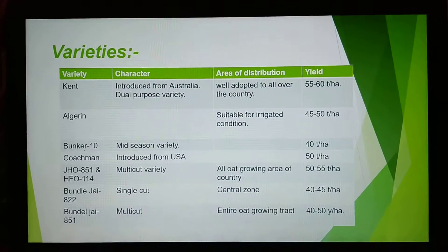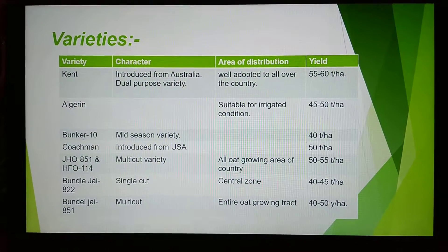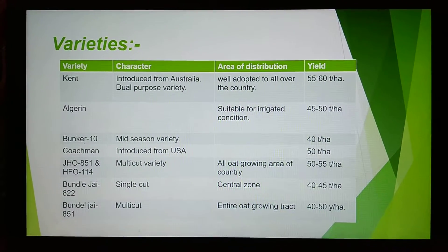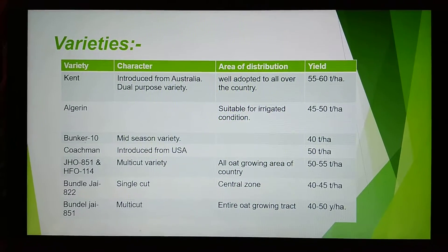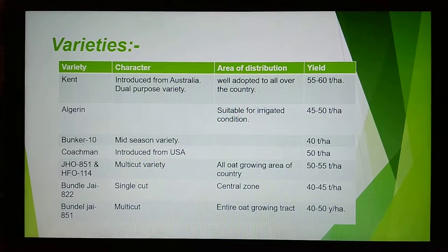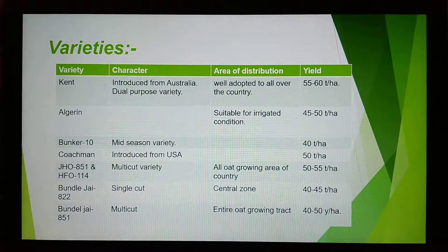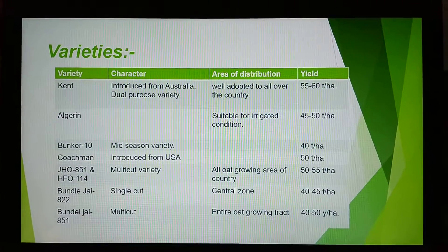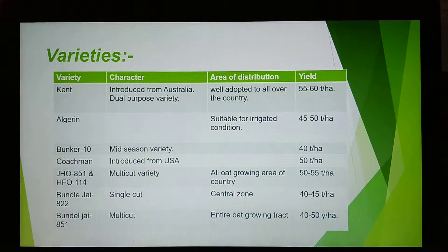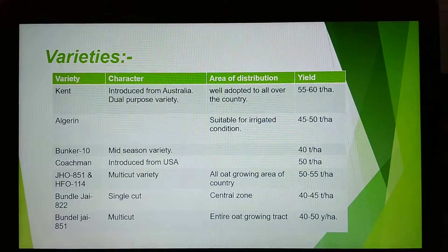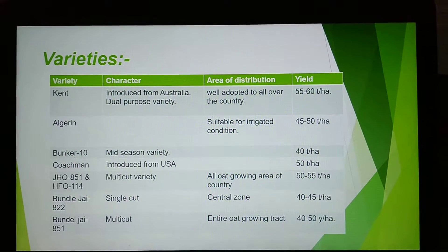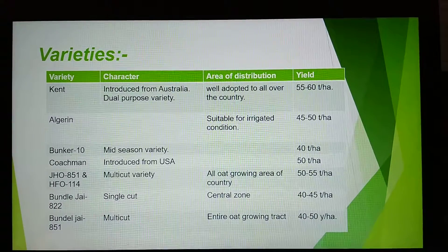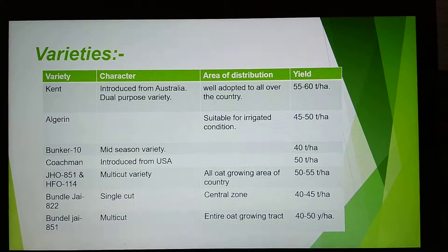Varieties: Various important varieties of oat are grown in India. Kent — an important variety introduced from Australia. It is a dual-purpose variety and well adapted all over the country. Yield of Kent variety is 55–60 tons per hectare. Algerian — suitable for irrigated conditions, yield 45–50 tons per hectare. Buntal 10 — mid-season variety, yield 40 tons per hectare.